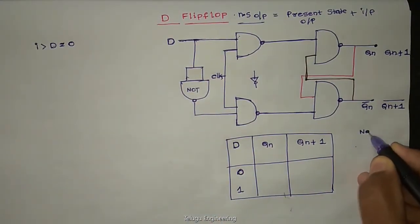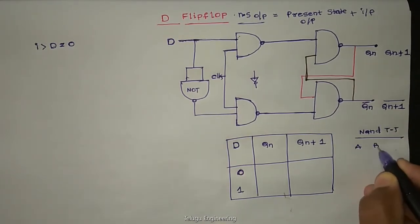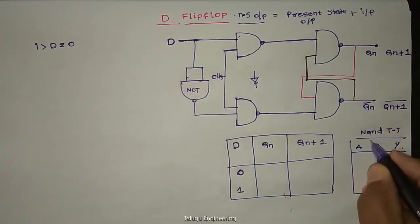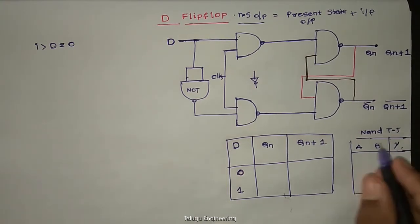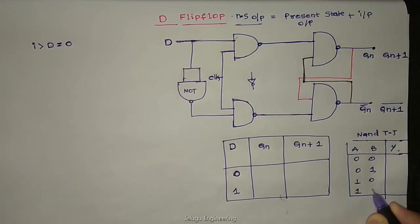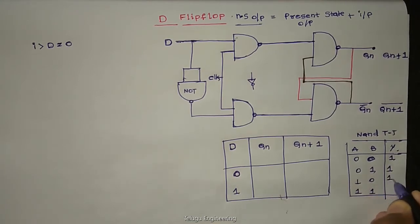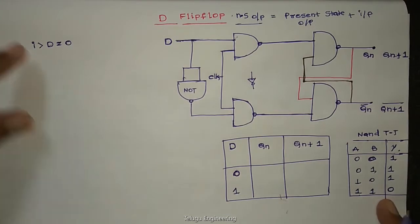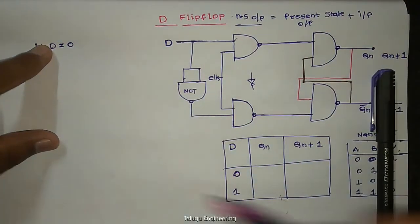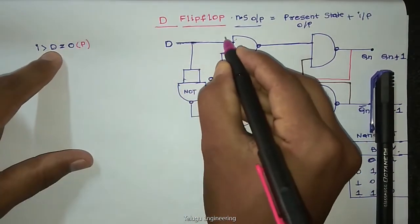So first condition D equal to 0. NAND gate truth table: let A, B be our inputs and Y is output. When zero-zero is one, one-zero is one, zero-one is one, one-one is zero. If we have input one time zero then automatic output is one.